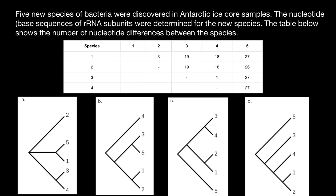Hello and welcome to Nikolai's genetics lessons. Today's problem: 5 new species of bacteria were discovered in Atlantic ice core samples. The nucleotide or base sequence of the ribosomal RNA subunits were determined for each new species. The table below shows the number of nucleotide differences between these species, and we have to find which phylogenetic tree represents the correct relationship between these 5 bacteria. Usually on your exam you may be given a couple of minutes to solve this type of problem, but some unprepared students may spend 10–15 minutes. Today's video is about how to solve this type of problem using a certain algorithm and solve it within 2 minutes.